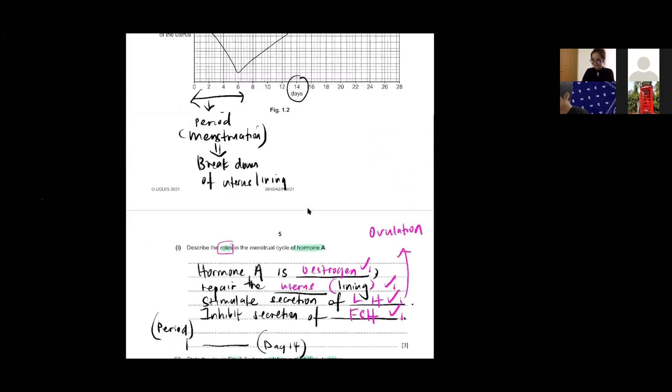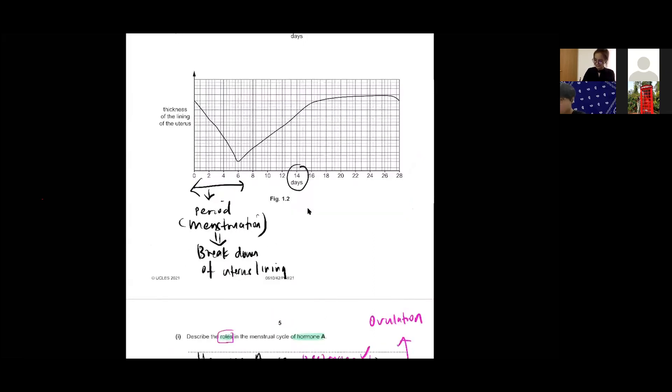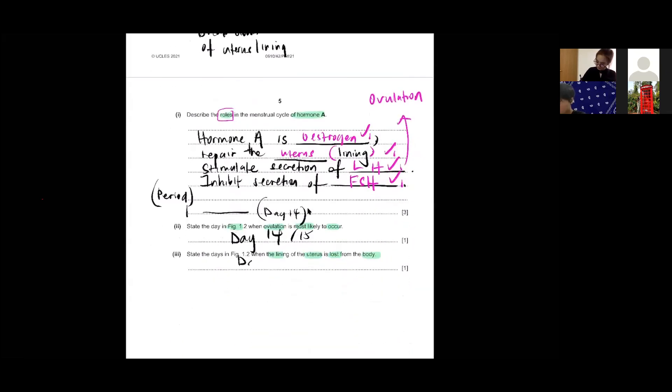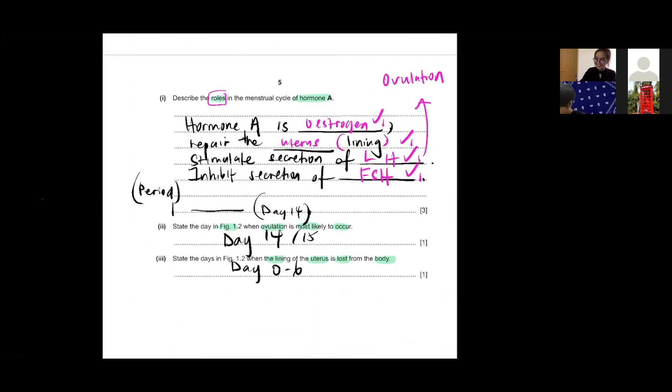State the days when the lining of the uterus is lost from the body. It breaks down. So you can mention days zero to six. Guys, read the question carefully. They say state the days, so that means you have to mention more than one day, correct. You see that? So do you see the difference? The first one you have to mention only one day, but the second one, days, you have to mention the range.